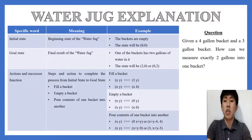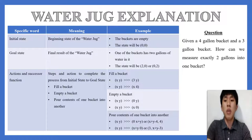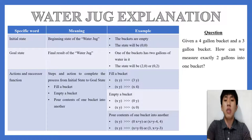Next we're showing a question. Given a 4-gallon bucket and a 3-gallon bucket, how can we measure exactly 2 gallons into one bucket? There are 2 states: Initial State and Goal State. For the Initial State, the buckets are empty, so the state will be (0, 0). For the Goal State, one of the buckets has 2 gallons of water in it, so the state will be (2, 0) or (0, 2).